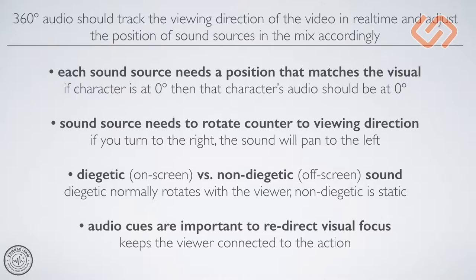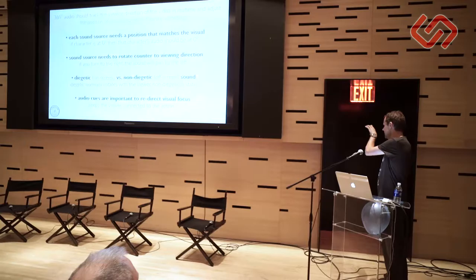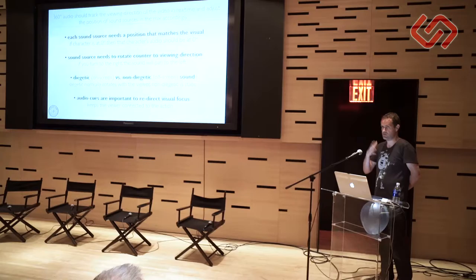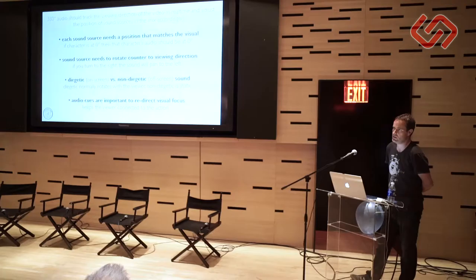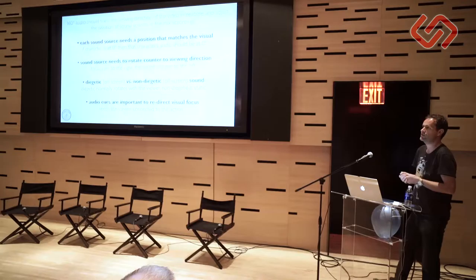So if I'm looking at a car and this car is in front, I will hear the car sound in front of me. Now if I turn to my right, instead of with stereo headphones where the whole mix would just go with your head, you want that car to stay there. So the sound needs to rotate left - a lot of people think the sound goes with the image but it actually counter-rotates. We need to accommodate sounds that rotate, but also what they call non-diegetic or off-screen sound - like a voiceover or music bed or ambient sound that needs to be static.